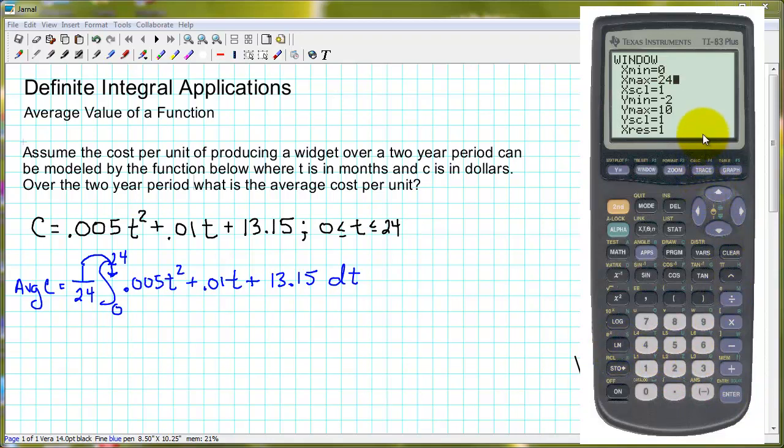And the y values here, I'm not sure what they're going to be. Let's just start out setting y min to be 0, and let's just make this 50. Let's see what these costs might be. Let's sketch a graph. Okay, obviously I made my y values way too big. Let's try here. Let's change y max to maybe 10.